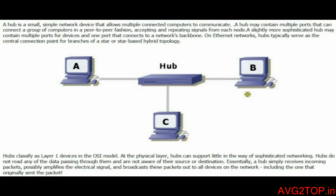The hub is classified as a layer-1 device in the OSI, which is the physical layer. Hubs do not read any of the data passing through them — they only act as a medium from source to destination. The hub receives packets, possibly amplifies the signal, and broadcasts to all devices. When a weak signal is sent from A to C, the data is broadcasted to all connected devices first, and then it tries to send the data to the right destination. If the signal is weak, it amplifies and boosts the signal before sending it to the destination.